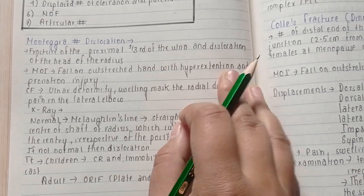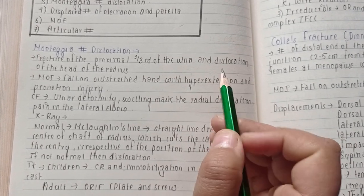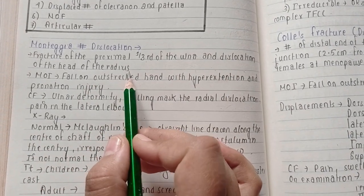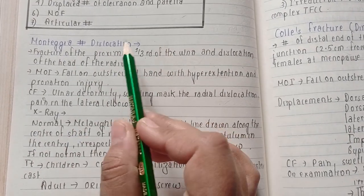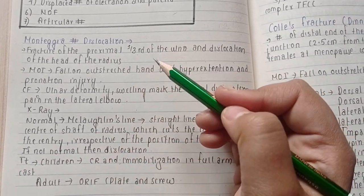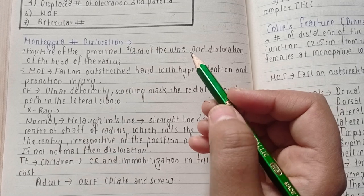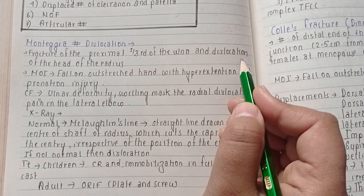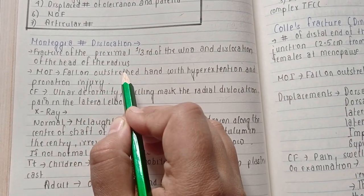...of the proximal one-third of the ulna and dislocation of the head of the radius. So it is the fracture of the proximal one-third of the ulna, while Galeazzi fracture is the fracture of the distal one-third of the radius. Here there is dislocation of the head of the radius.